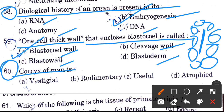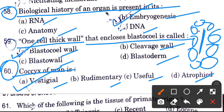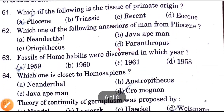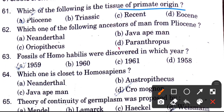Coccyx of man — coccyx is vestibial, rudimentary, useful, or atrophied? Coccyx is vestigial. Coccyx is a tailbone which is reduced in man.